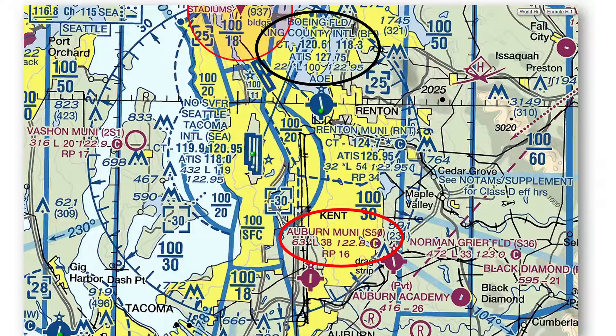See the blue arrow pointing to the magenta circle with dashes sticking out. If there is a circle with dashes sticking out, this indicates that fuel is available at the airport. If no dashes are sticking out of the circle, then there is no fuel available at the airport.